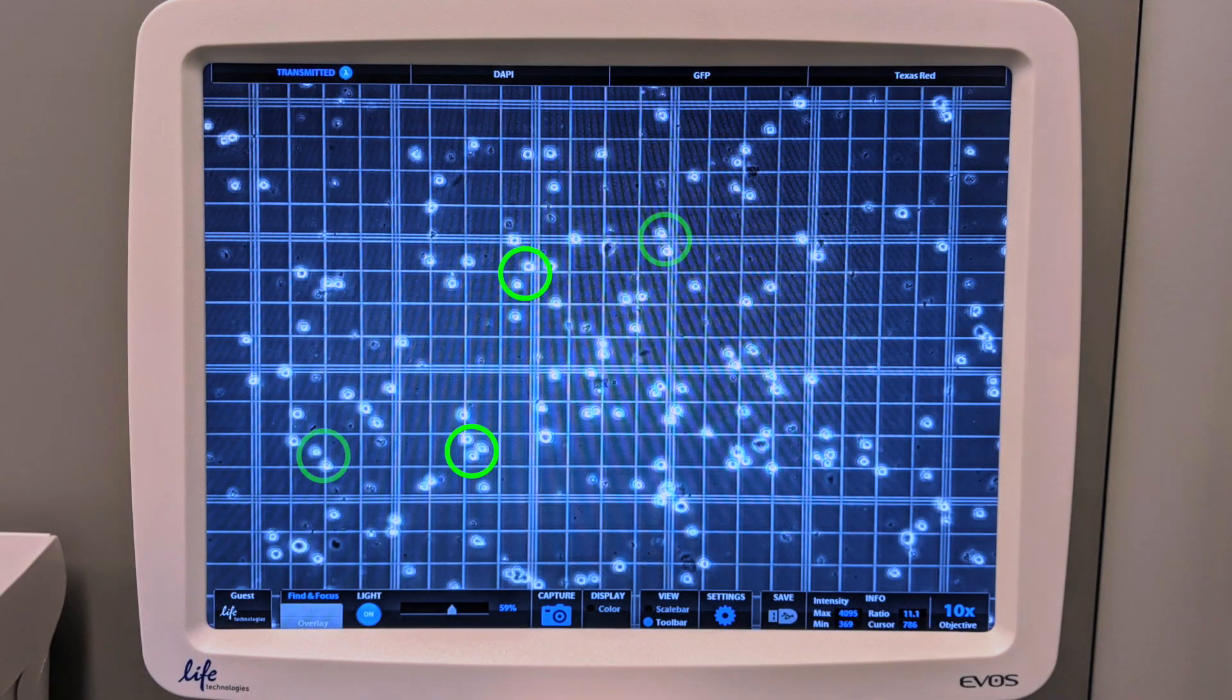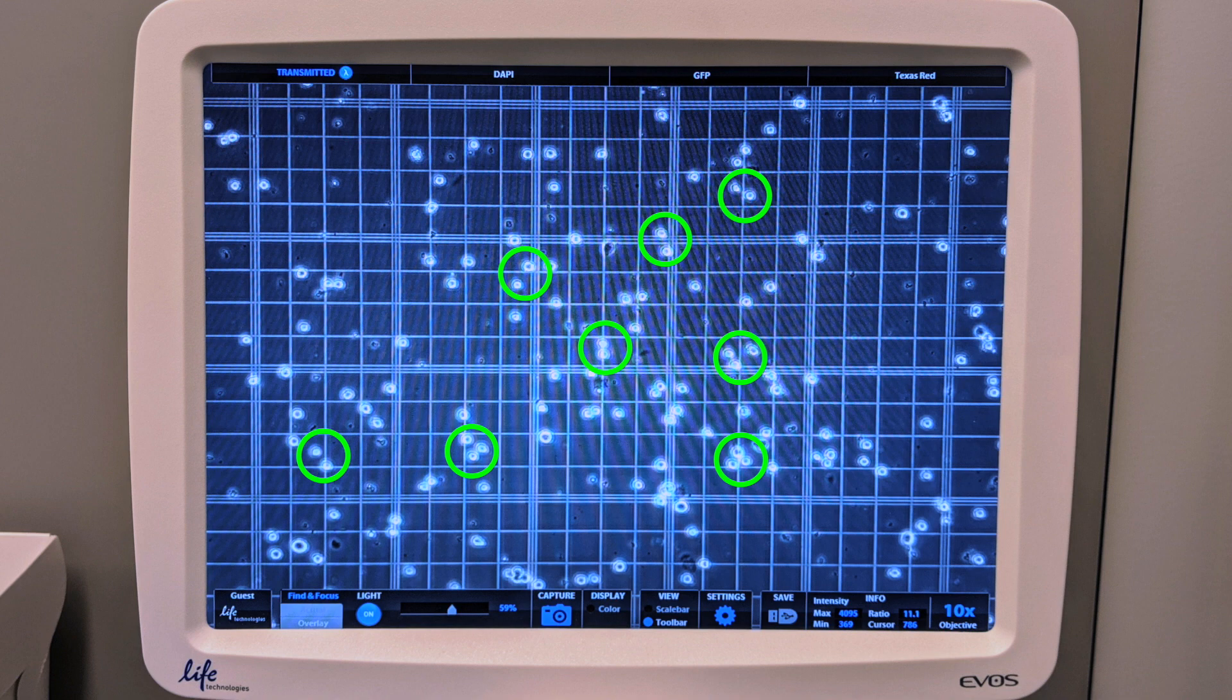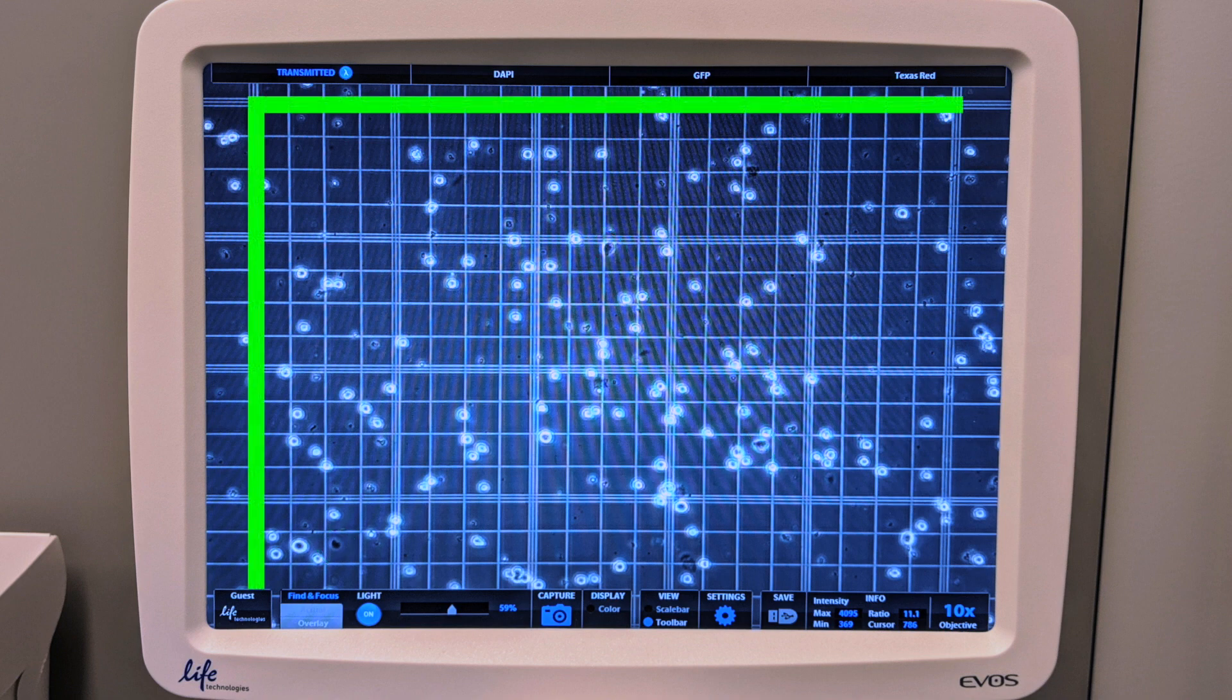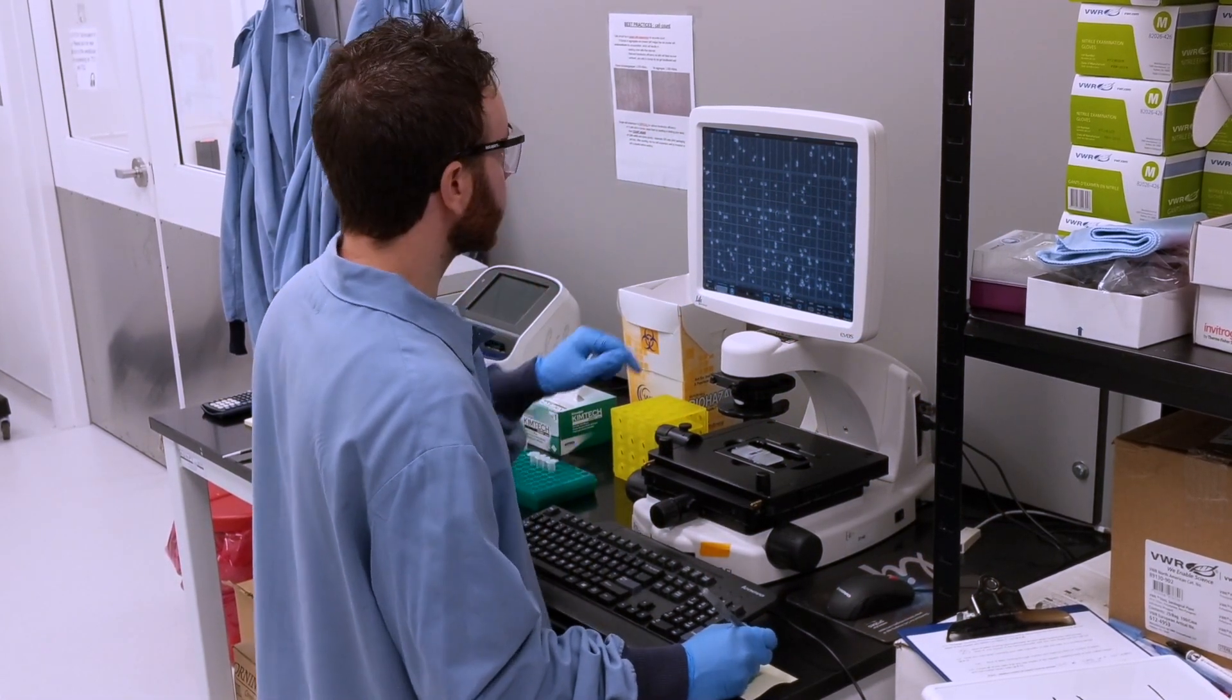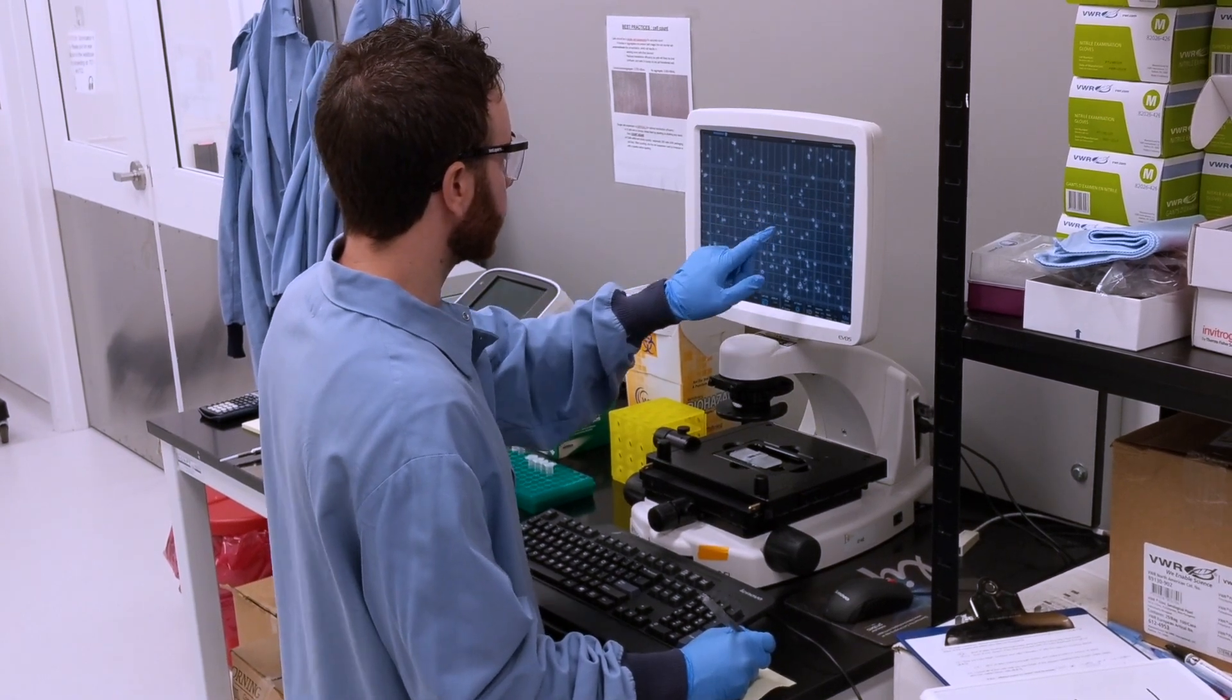Count all of the cells that you see inside of the square, keeping track of both the viable clear cells and the non-viable blue ones. To account for cells that touch the edges, count all of the cells that touch two out of the four sides of the square. To make sure you do this in an unbiased way, choose the same two sides for every square you count.